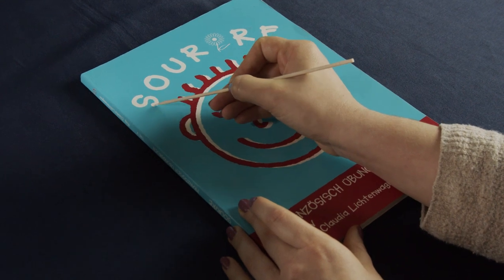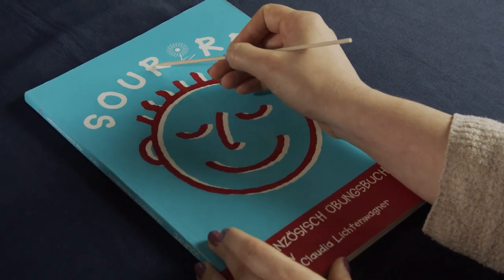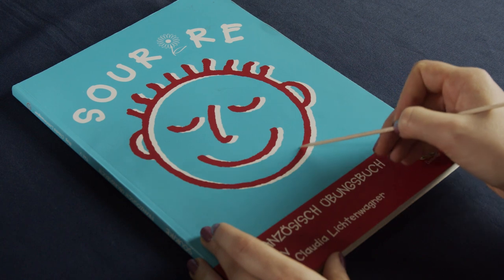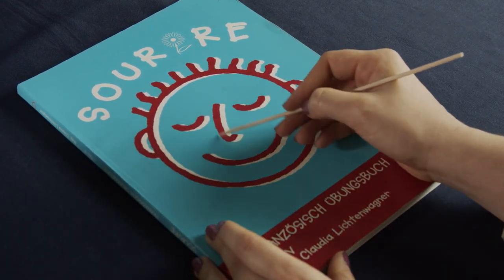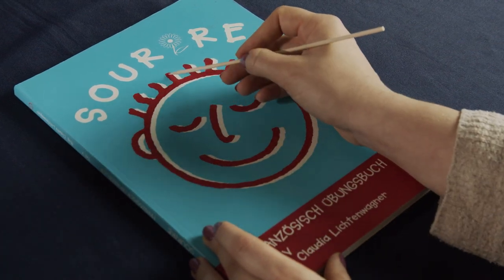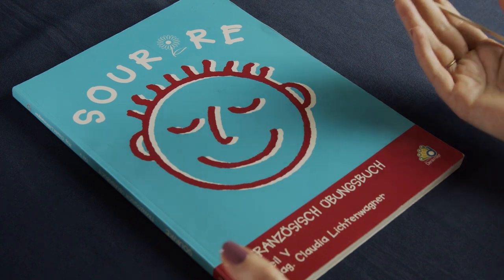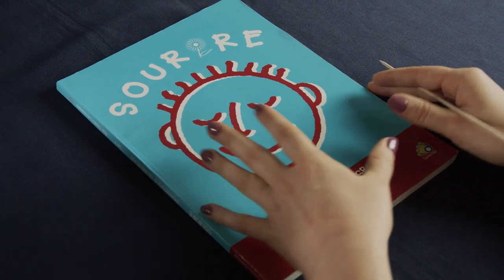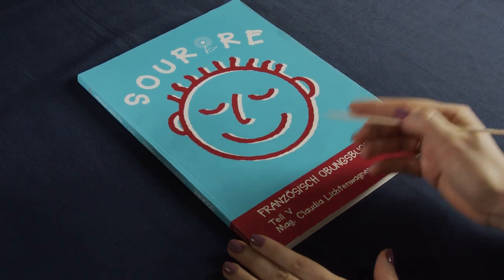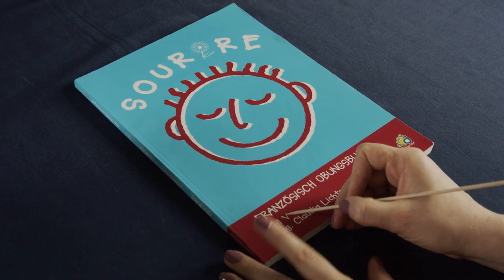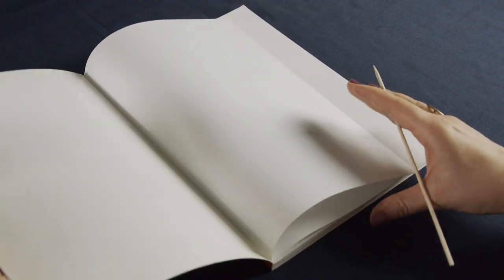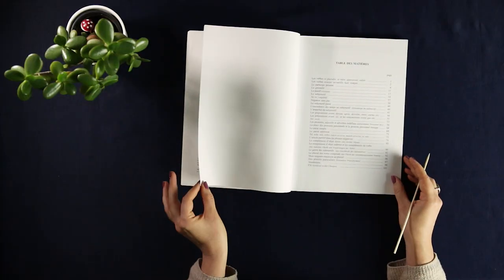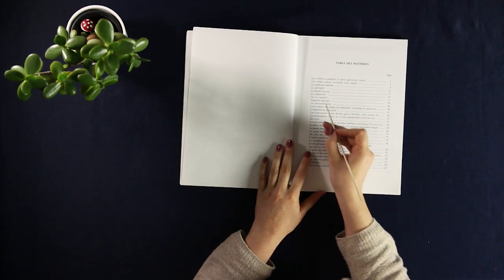This one is called Sourire and that means smile. And there's also one for English learners which is called Smile. I think a lot of people in school get these if they want to do additional exercises, so most pupils probably own one. There are five different parts and this is part five.